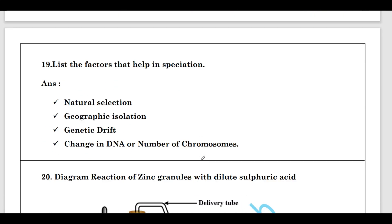Nineteenth question: List the factors that help in speciation. Evolution of a new species is called speciation. The factors that help in speciation are: natural selection, geographic isolation, genetic drift, and change in DNA or change in the number of chromosomes.